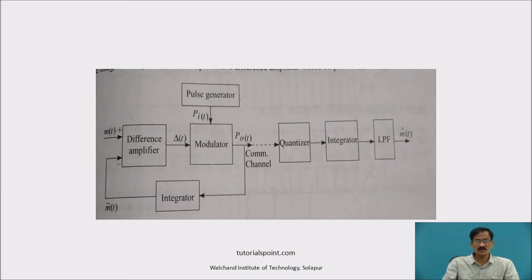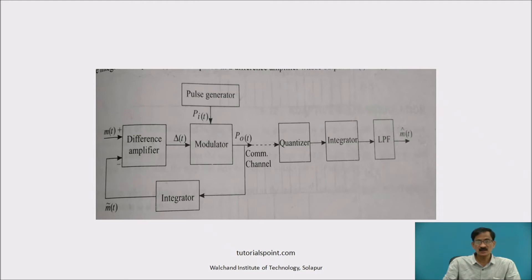Here we will find a block diagram of a delta modulator. At the initial stage, a difference amplifier gives the difference of M(T) and M-cap(T) — the analog input signal and the predicted output signal. The output of the difference amplifier is delta(T). It is given to a modulator that multiplies delta(T) by a pulse generator P(T). The output P_0(T) — these quantized pulses are sent through the channel and received at the receiver, consisting of a quantizer, integrator, and low pass filter to reconstruct the original analog signal.